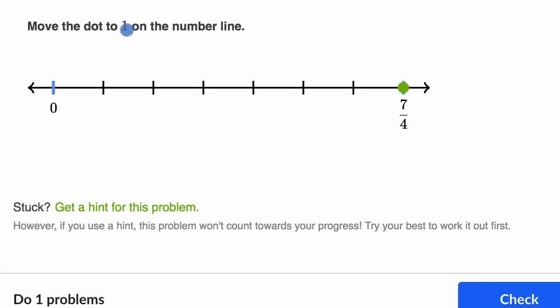So where would one be? Well, one would be four fourths. So we would go one fourth, two fourths, three fourths, and then four fourths. So that's where one is.